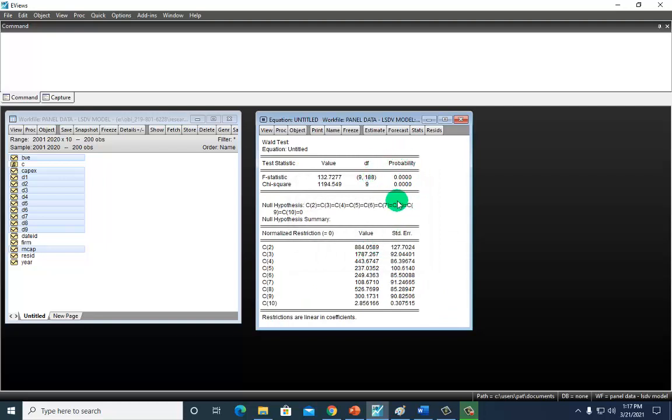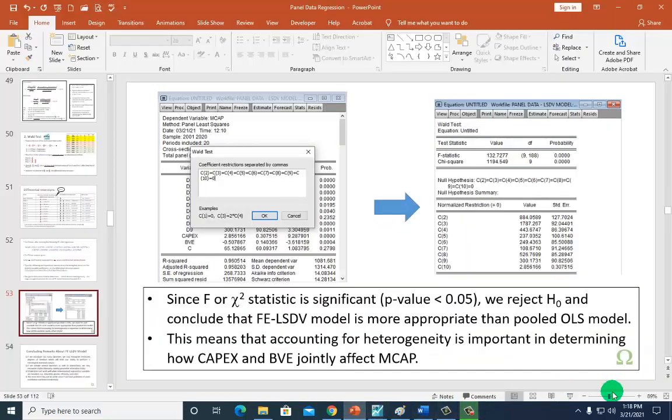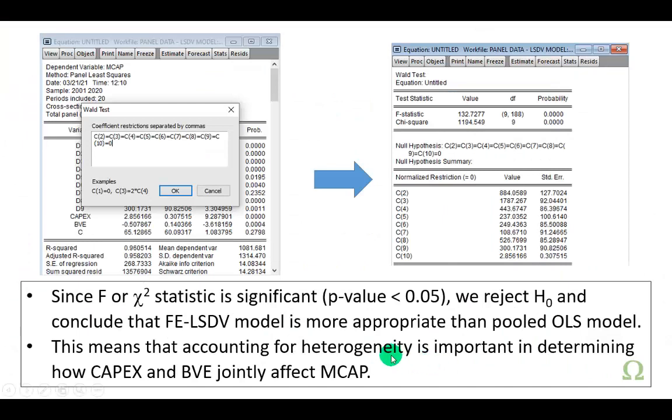And as you can see here, both the F statistic and the chi-square statistic are telling us, based on the p-values, that the differences are statistically significant. So as a result, we conclude that accounting for heterogeneity is definitely important in determining, in this example, how capital expenditure and book value of equity jointly affect market capitalization. And that's it.